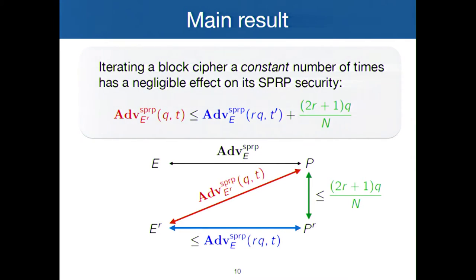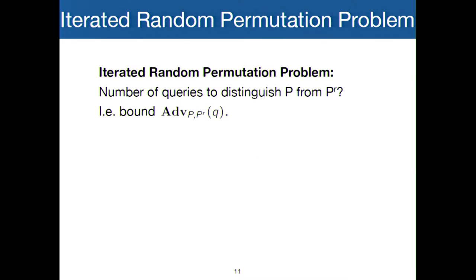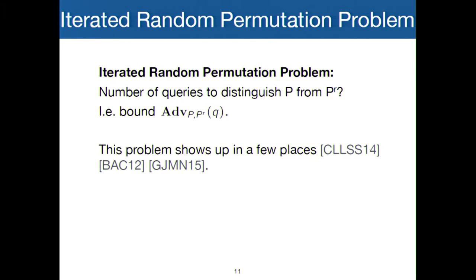This is what we decided to call the iterated random permutation problem: how many queries do you need to distinguish a random permutation from the R-th power of a random permutation? This is a very natural problem, and it's perhaps surprising that it wasn't really tackled as such before. It does show up in several places. In fact, it was asked as an open problem in the tokenized even-Mansour paper by Chen, Li, Lam, Seurin, and Steinberger at CRYPTO last year.